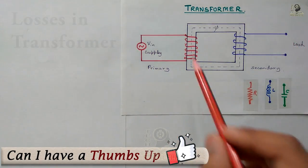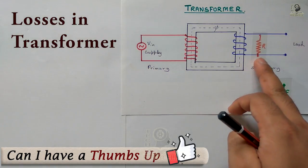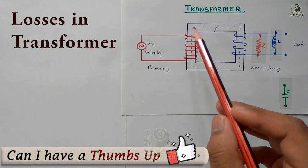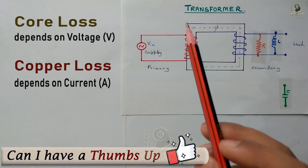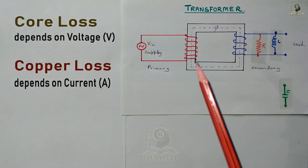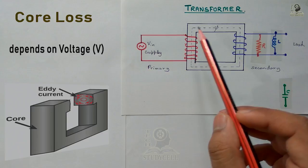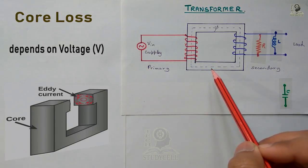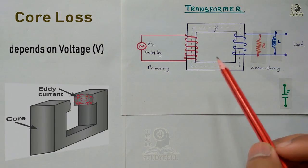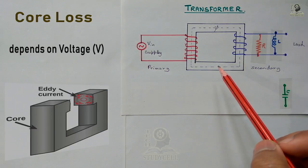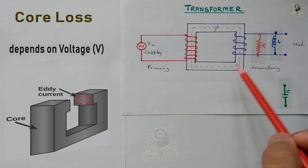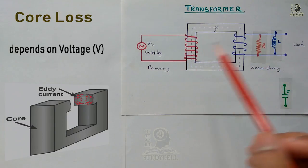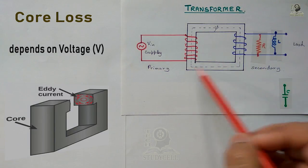The next reason is the losses that occur in the transformer. If there is a resistive and inductive load at the secondary, then there are two types of losses in the transformer: core loss and copper loss. The core loss or iron loss depends on the voltage of the transformer and the magnetic property of the core material. As the magnetic property of a core material is constant for a transformer, the core loss depends on the voltage. During operation, the input and output voltage of a transformer remain constant, so core loss is a constant loss.